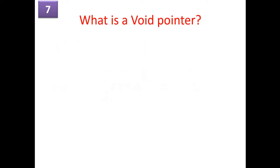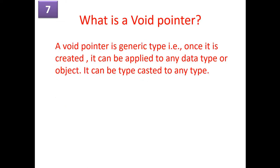What is a void pointer? A void pointer is a generic type. Once it is created, it can be applied to any data type or any object. So it can be typecasted to any type you want at a later point of time.